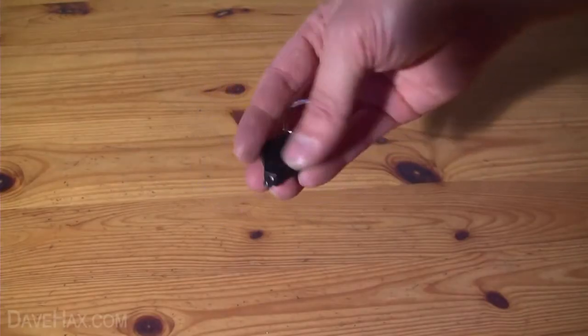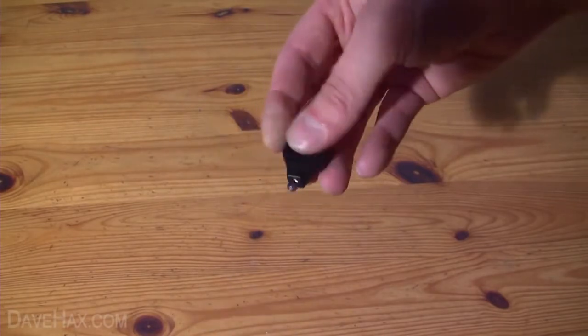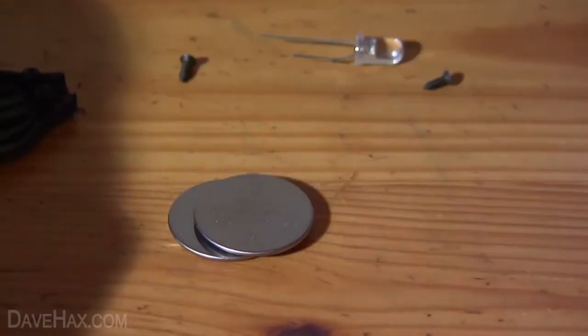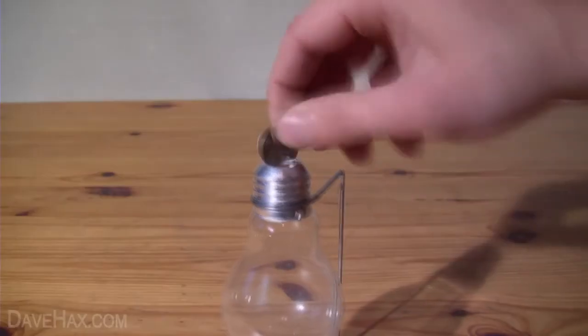And to do this we're going to use an LED key ring. Take it apart and remove the battery and the LED. As you can see this one actually has two batteries and they're too big to fit inside the bulb.